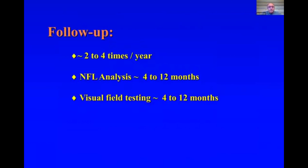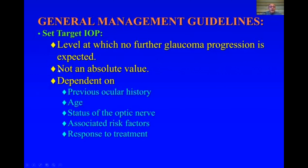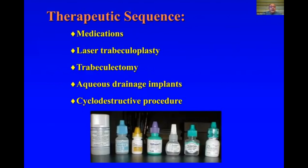For follow-up in MPS patients as a rule of thumb, pressure and other findings should be assessed two to four times a year. Nerve fiber layer analysis via OCT is done every two to twelve months depending on findings, and visual field testing follows the same schedule of four to twelve months. The general management approach is that the ophthalmologist will set a target pressure — for example, 16 — and everything is done to ensure the eye pressure does not exceed that. After a year, if slight visual field loss is seen, a new lower target pressure, such as 14, may be set.